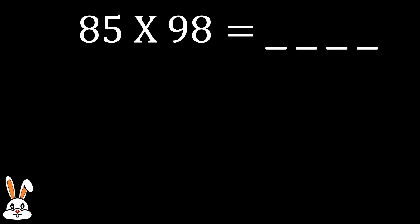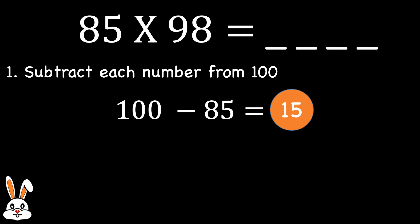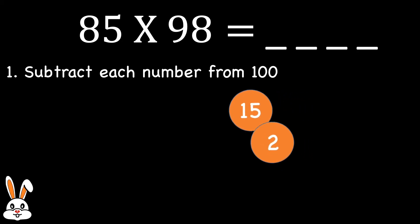For step 1, which is the most crucial step, we take these numbers and subtract both of them from 100. So we would get 15 and 2. These are the two most important numbers for this trick. So let's keep them aside.